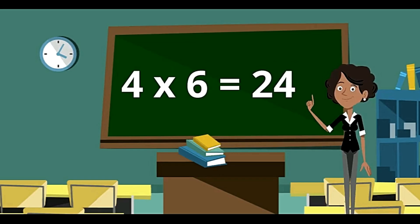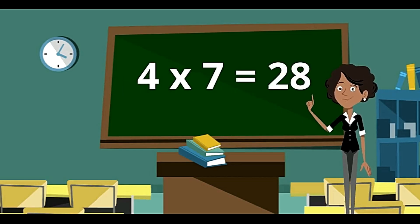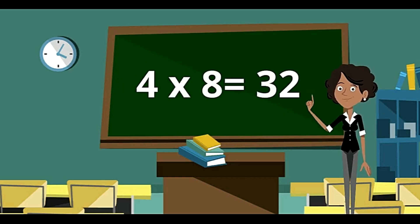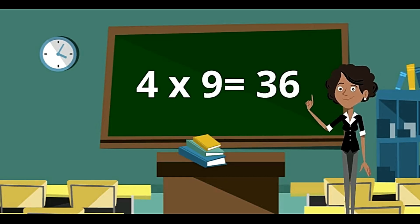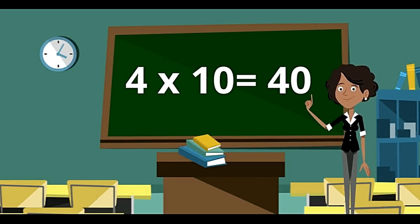4 sixes are 24. 4 sevens are 28. 4 eights are 32. 4 nines are 36. And 4 tens are 40.